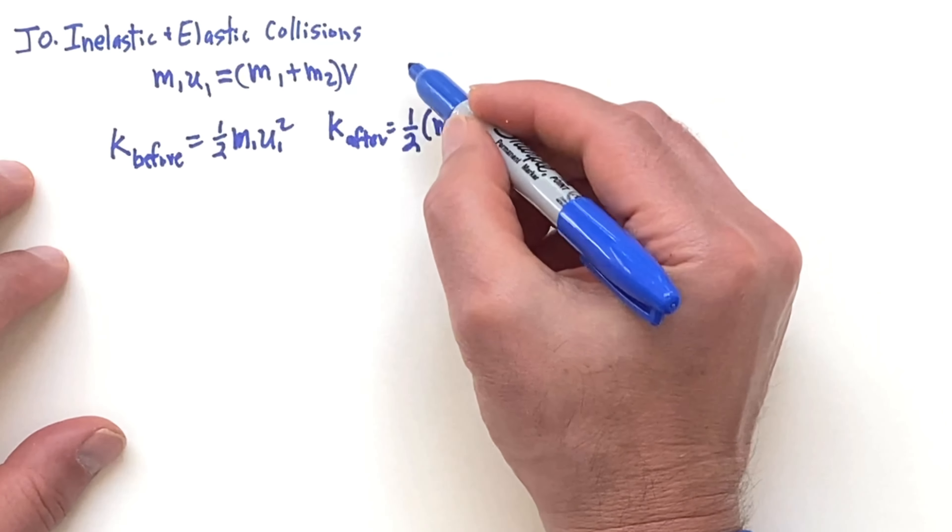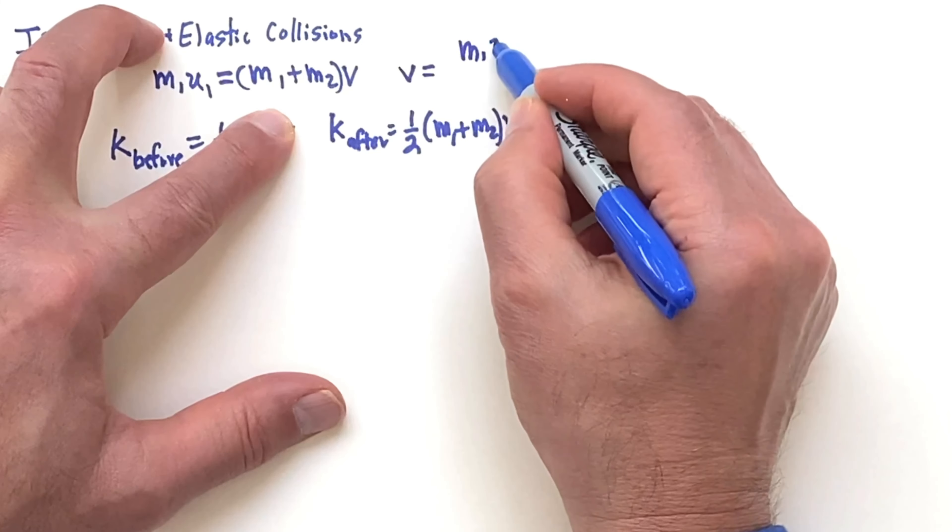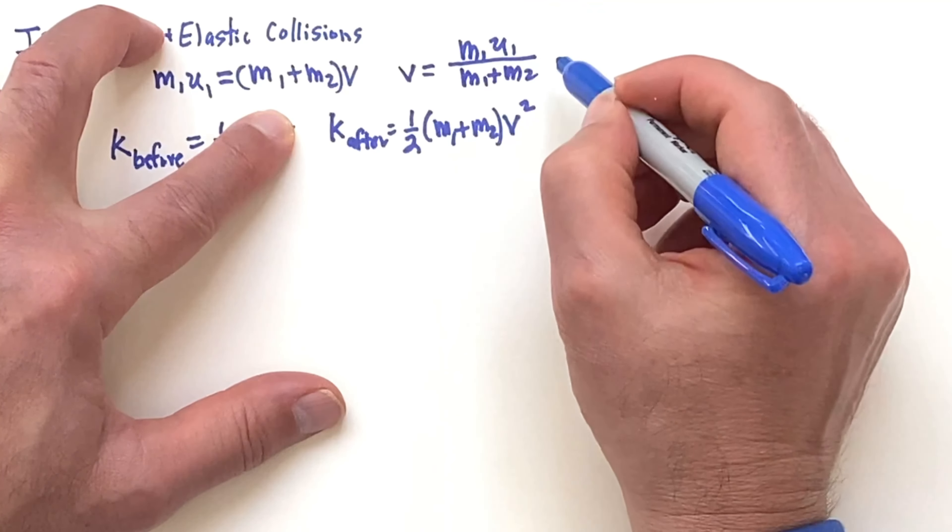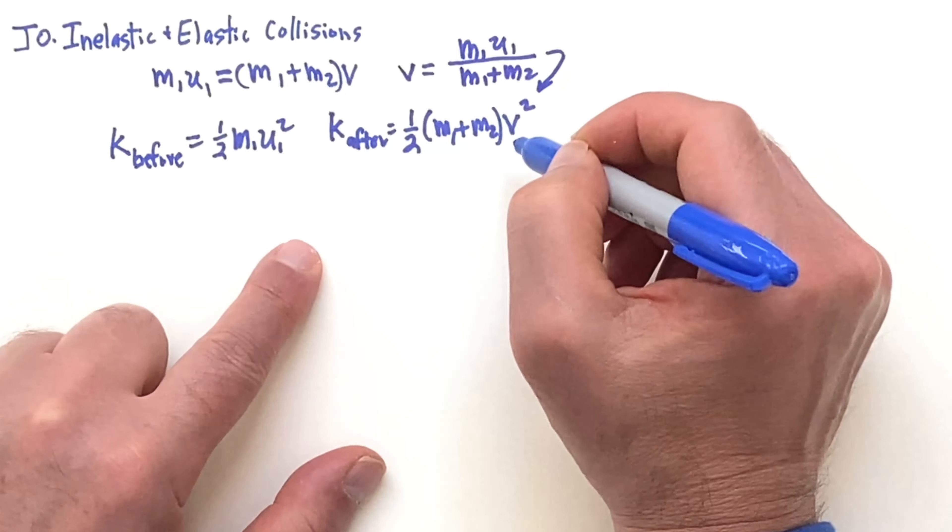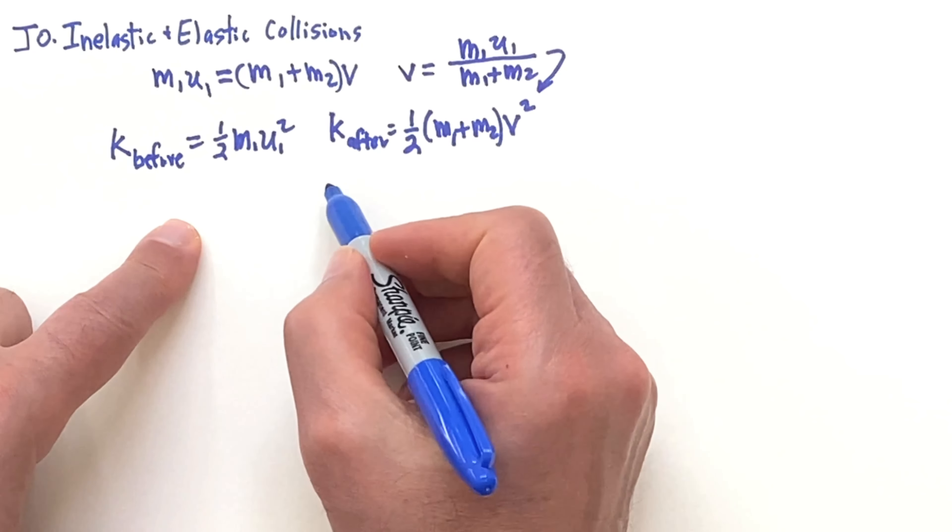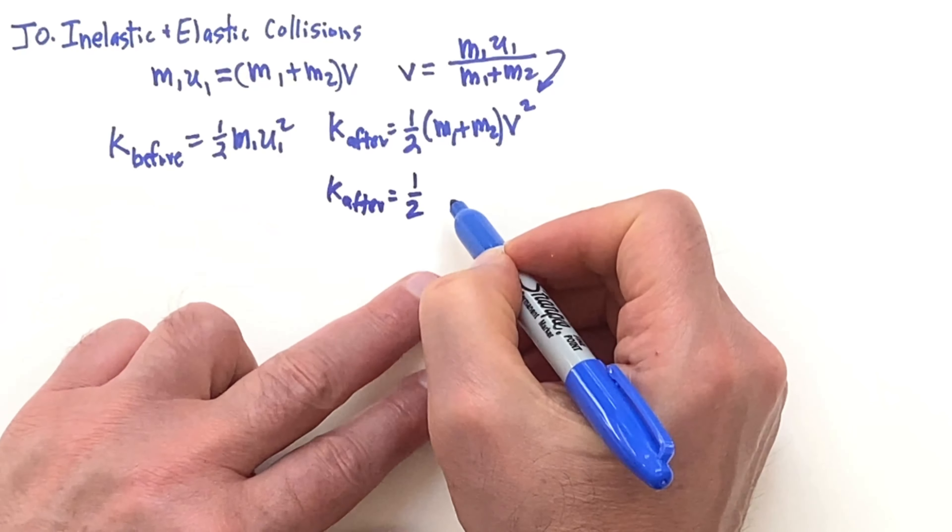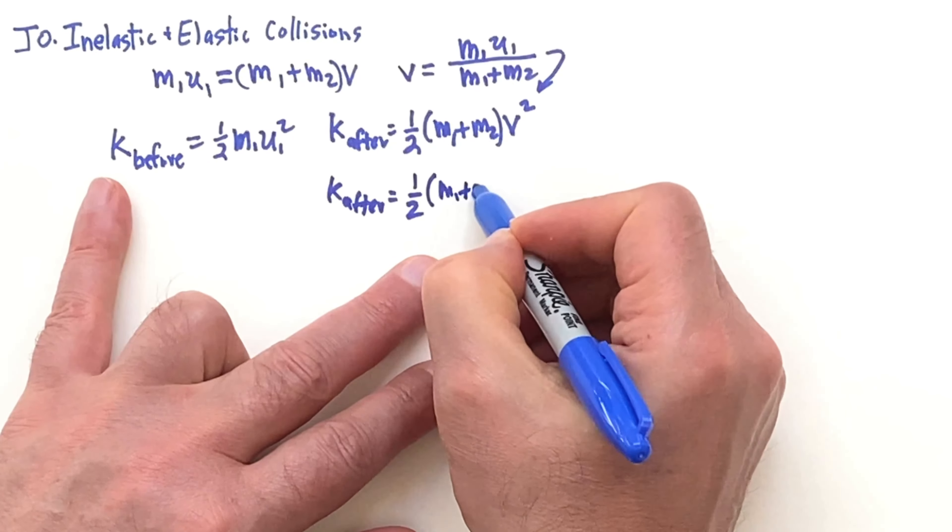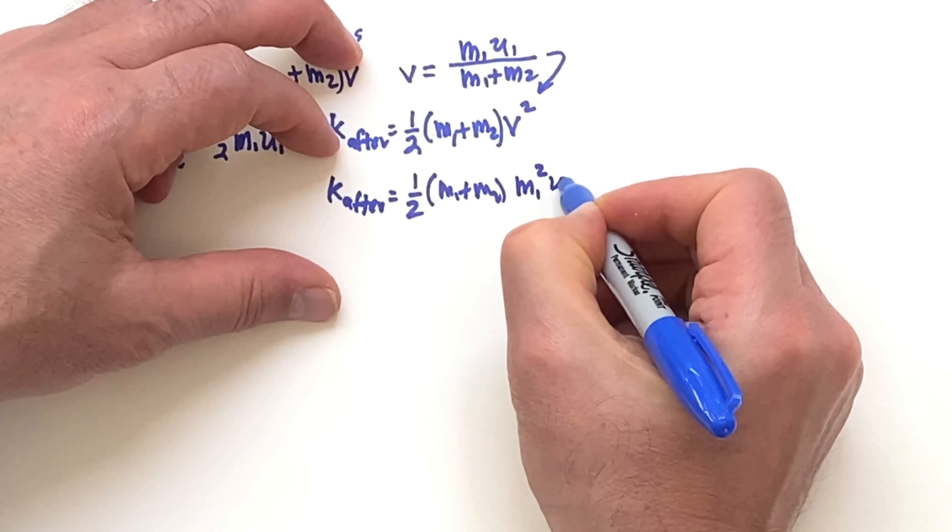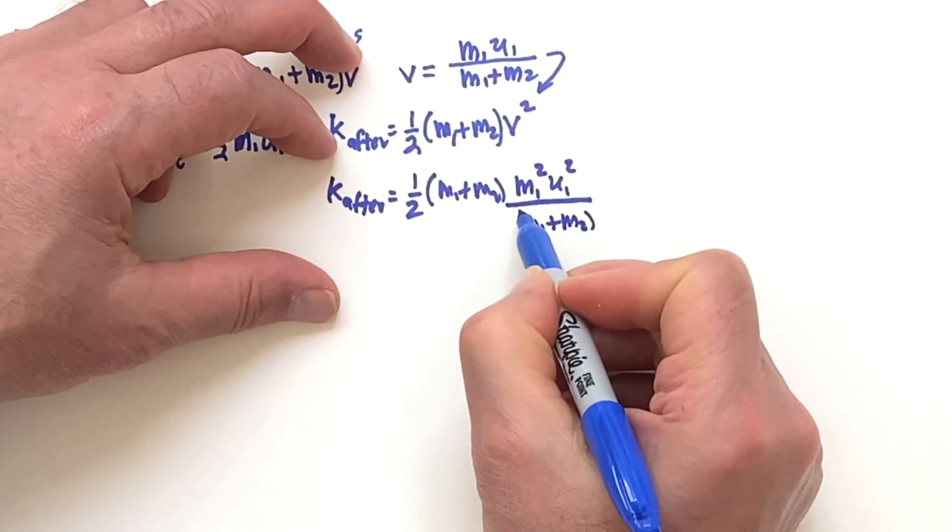So to compare, we're going to use this top equation where we solve for the velocity afterwards by dividing by the sum of the masses, and then this is going to go in for the velocity at the after situation. So when we do that, we're going to get for the kinetic energy after, that's going to be one-half M1 plus M2, and then this gets squared, so that means we'll have M1 squared U1 squared divided by M1 plus M2 squared.